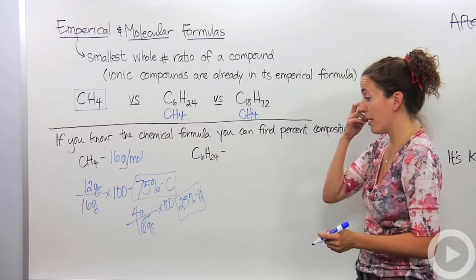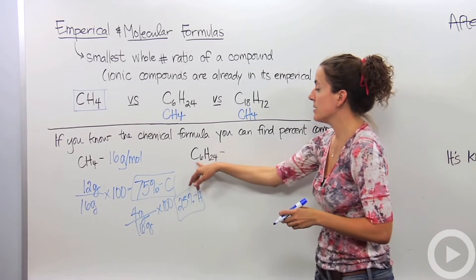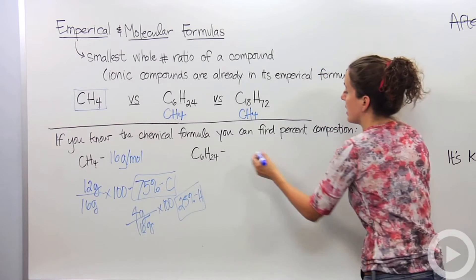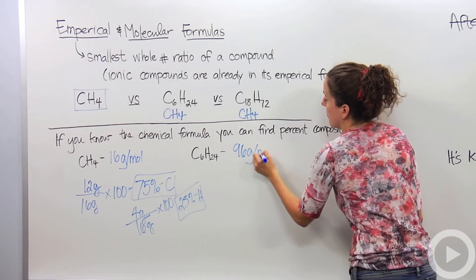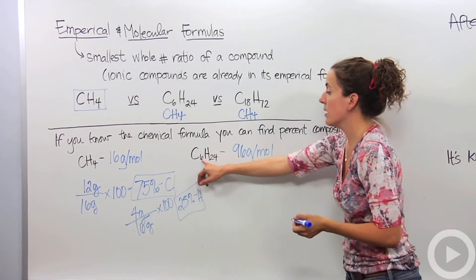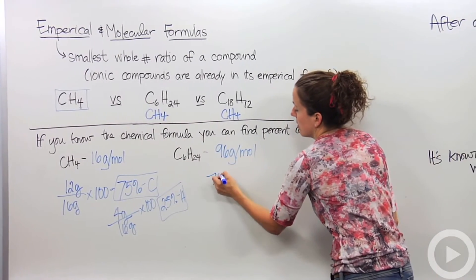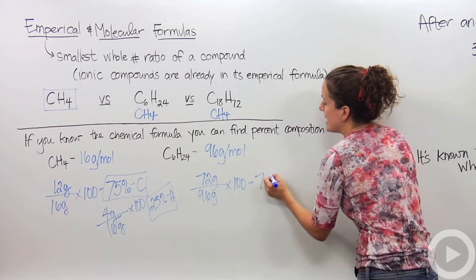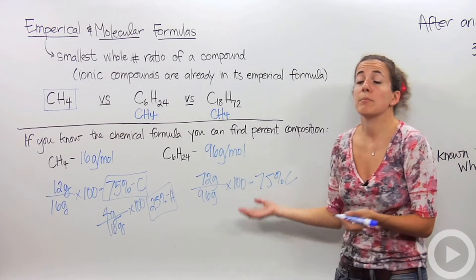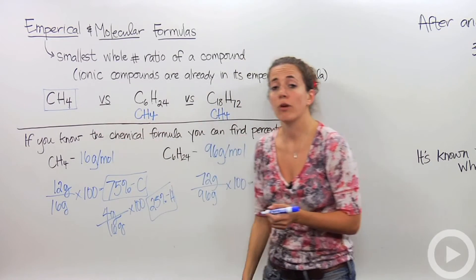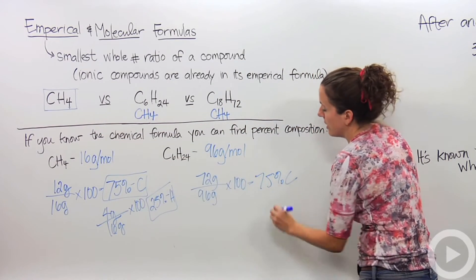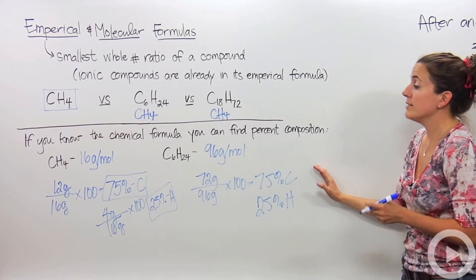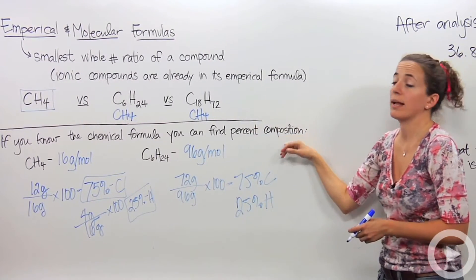Let's look at C6H24 and find its percent composition. Six carbons and 24 hydrogens give us a total mass of 96 grams per mole. Six carbons give us a mass of 72 grams, over a total of 96 grams for the whole compound, multiplied by 100. We get 75% carbon, which makes complete sense because CH4 and C6H24 have the exact same empirical formula — they should be ratios of each other. We can also assume it's 25% hydrogen.